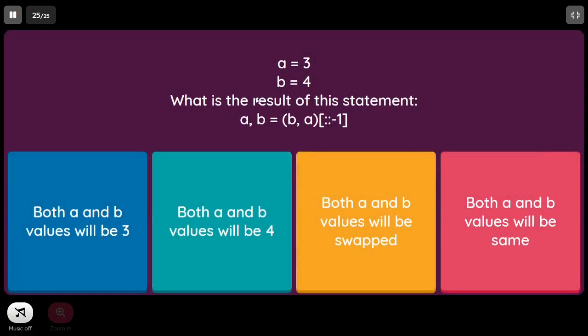A = 3, B = 4. What is the result of: A, B = (B, A)[::-1]? Normally ::-1 reverses, but here we are using B, A (which is already reversed) and then reversing it again — reverse of reverse is the original. So the values will not be altered, and the answer is option D: both A and B values remain the same.